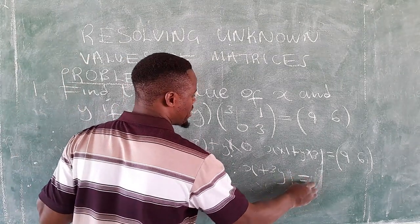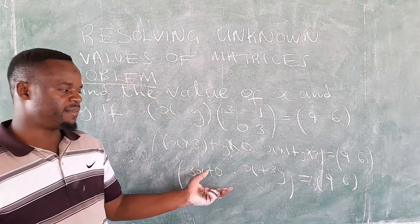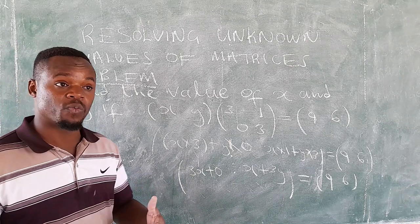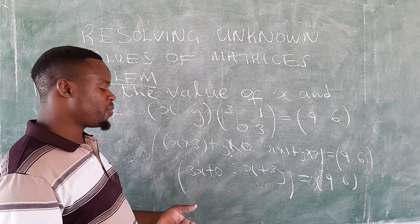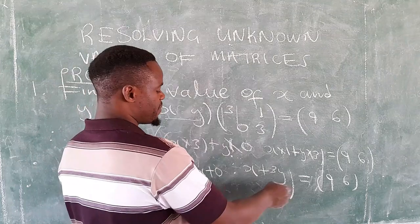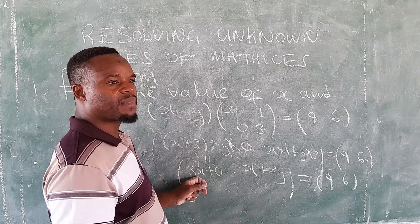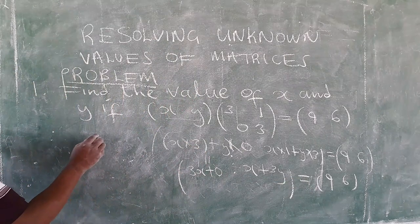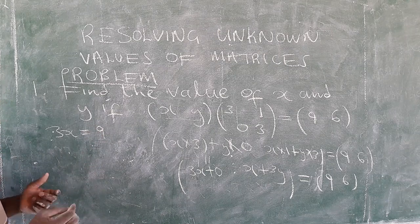This will actually equate to 9 and 6. So now out of what we have we can actually create equations for us to be able to determine the values of x and y. So the first equation, since anything added to 0 is that anything, so what we have is 3x. Then this is the first entry of the first matrix, so we are actually relating the entries according to the positions. So 3x will equal to 9. Then the second equation will be x plus 3y which is equal to 6.